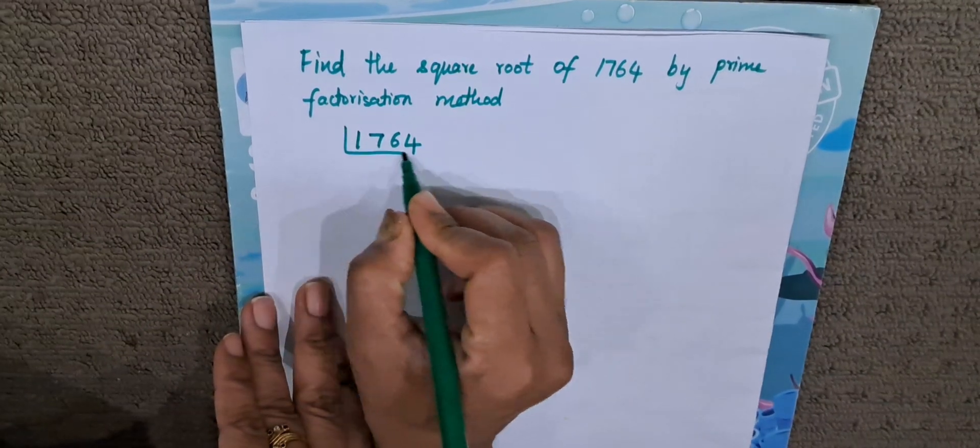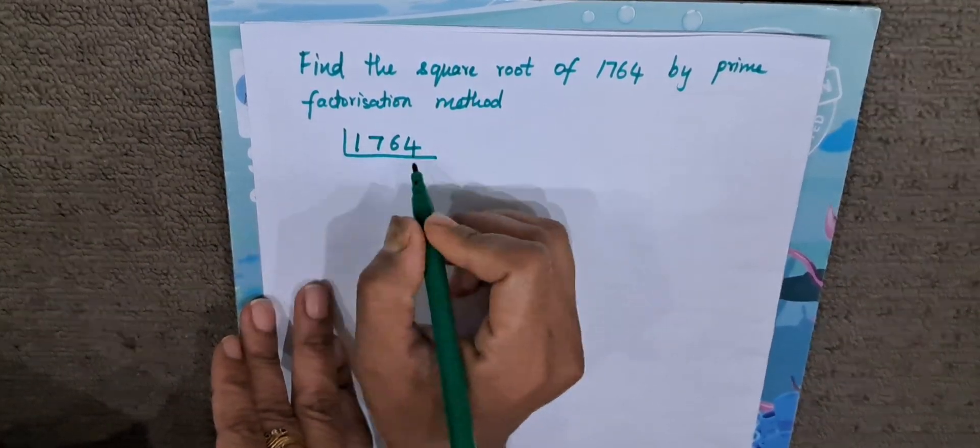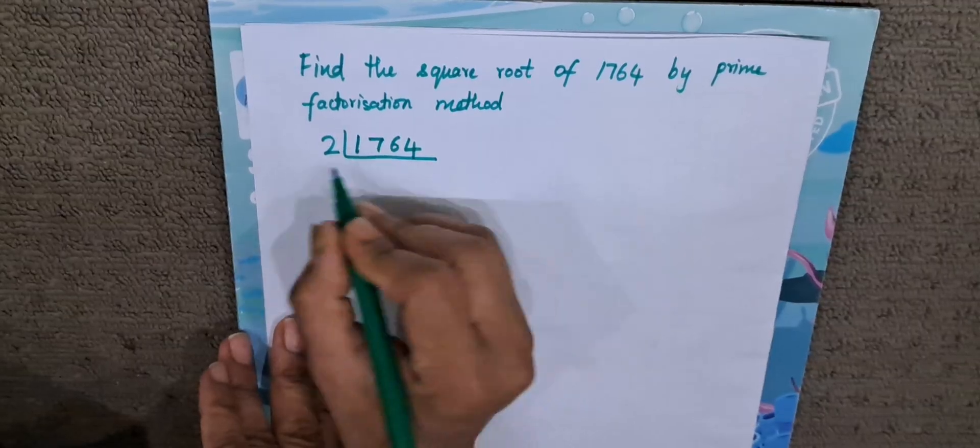The smallest prime number we have to go on dividing with. We will start with 2, which is the smallest prime number here.